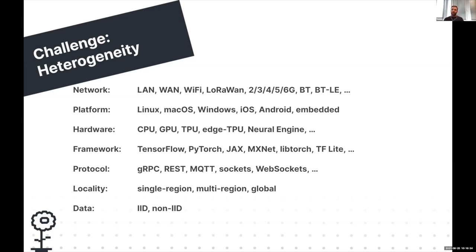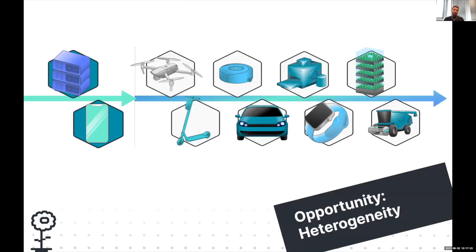Some devices just have CPUs; then there are new developments like the Edge TPU or the Neural Engine on Apple devices. When it comes to frameworks, server-grade machine learning frameworks like TensorFlow or PyTorch aren't necessarily the best fit for edge devices — we might need TF Lite for model personalization or C++ with LibTorch for maximum performance. Additionally, data locality shifts from a single region to multi-regional or global scale, and the data in individual partitions is usually non-IID distributed.